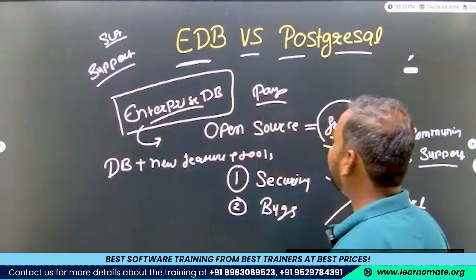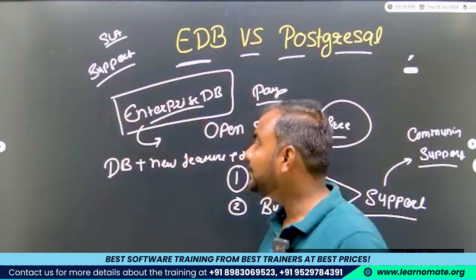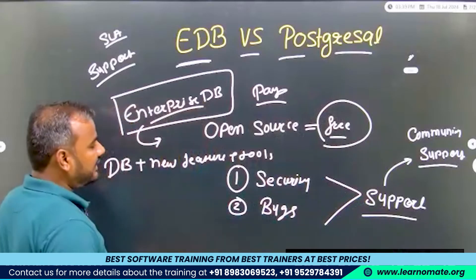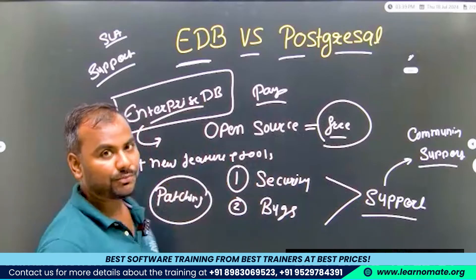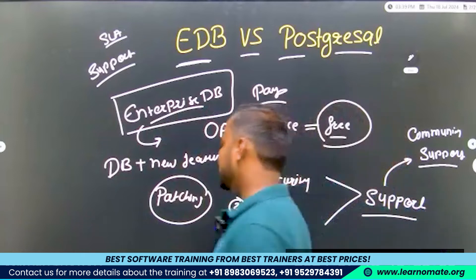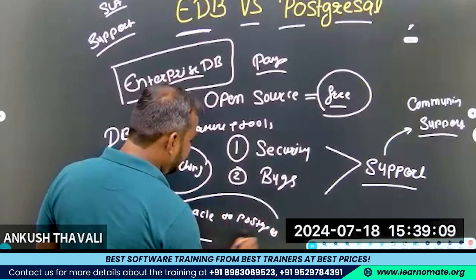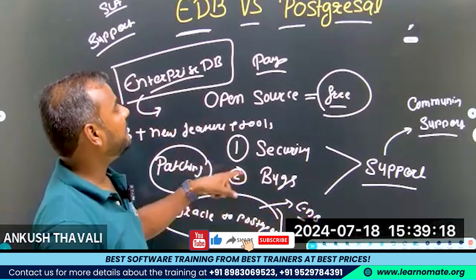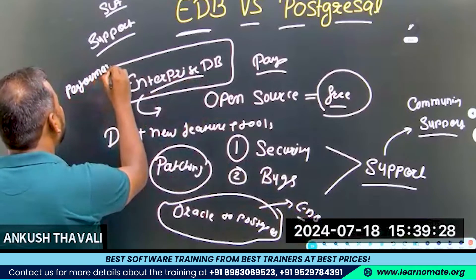The main differences: PostgreSQL is open source and free, but when you use EDB's PostgreSQL you pay for support. Additionally, EDB provides patching — which removes bugs and security problems — migration tools for moving from databases like Oracle to PostgreSQL, and performance improvements through additional tools and technologies.